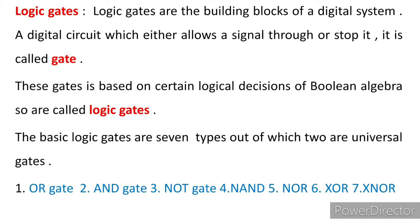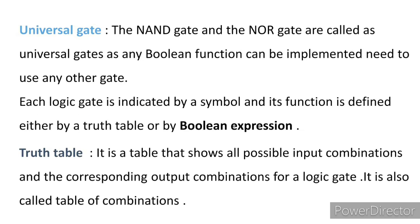The basic logic gates are seven types, out of which two are universal gates. The gates are: OR gates, AND gates, NOT gates, NAND gates, NOR gates, XOR gates, and XNOR gates. The NAND gates and NOR gates are called universal gates, as any Boolean function can be implemented using them without needing any other gates.